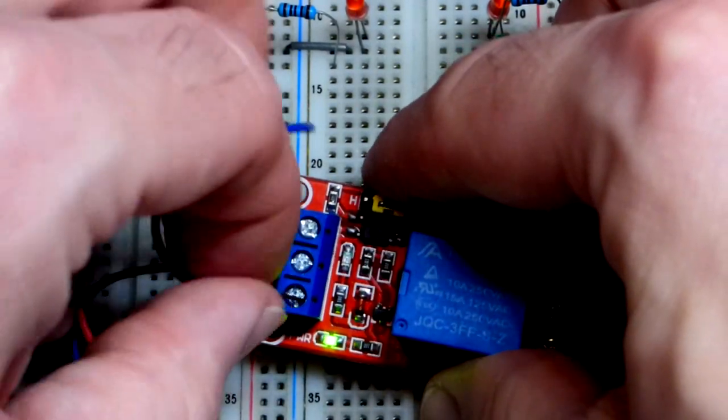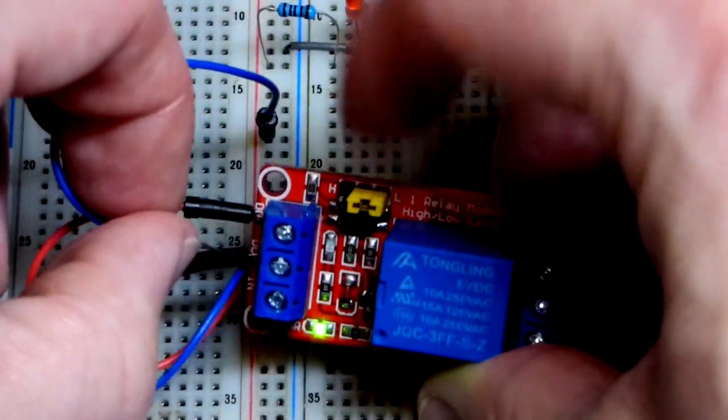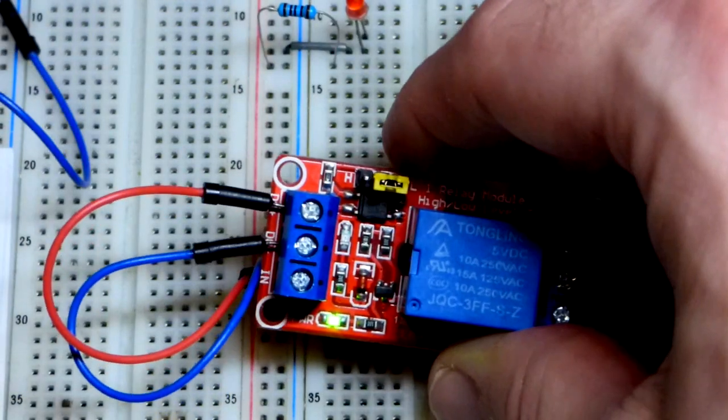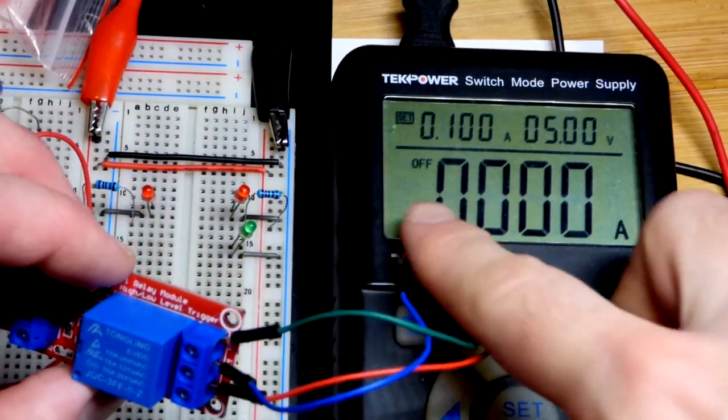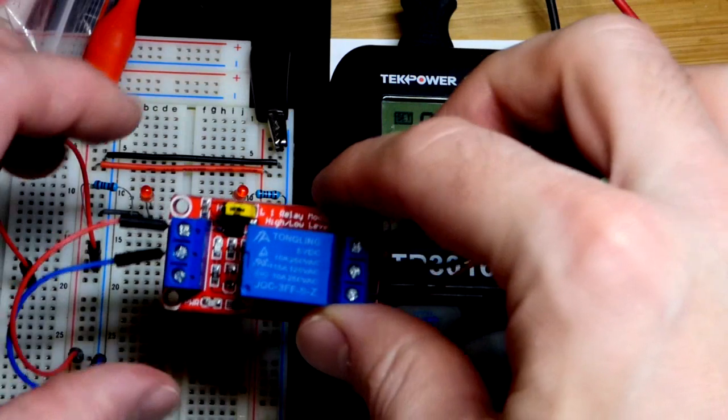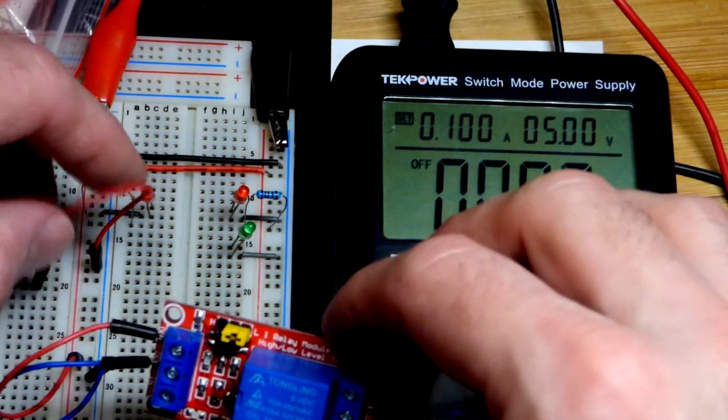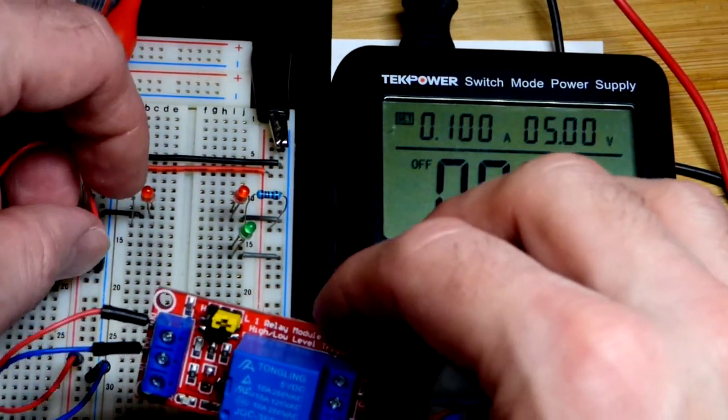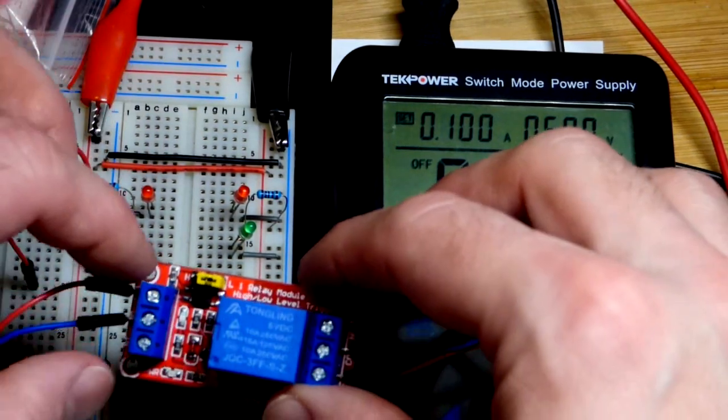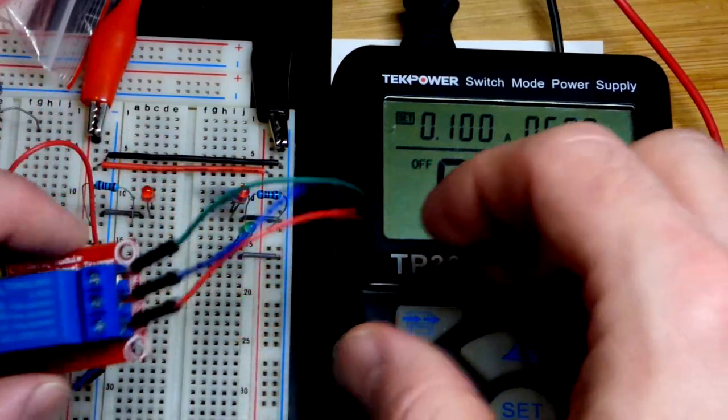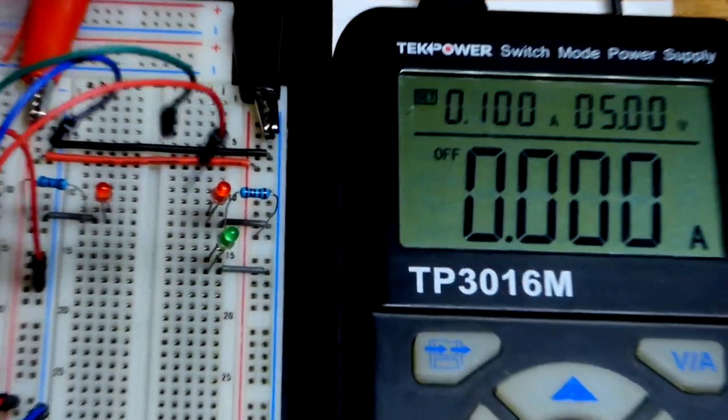So now I turned the power supply output off because we're gonna do some wiring, so it's a good idea. I must have grabbed the blue jumper I was using before off the board, so now I got a red one there. I put it to the ground because I still have this set to low.